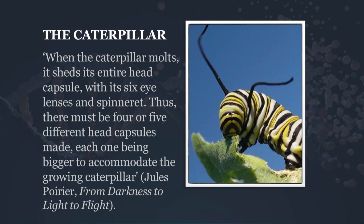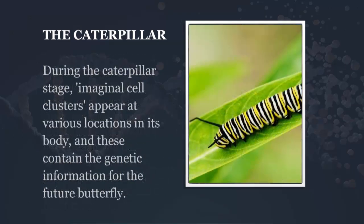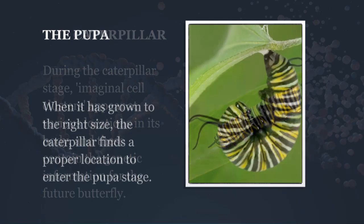When the caterpillar molts, according to Jules Poirier, it sheds its entire head capsule with its six eye lenses and spinneret. Thus there must be four or five different head capsules made, each one bigger to accommodate the growing caterpillar. During the caterpillar stage, imaginal cell clusters appear at various locations in its body, containing the genetic information for the future butterfly.